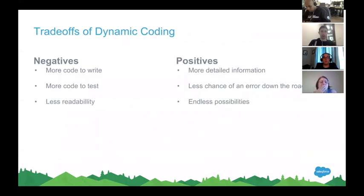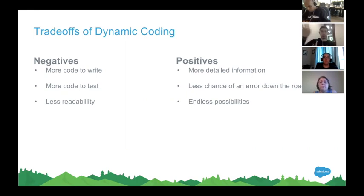Some trade-offs: our static code was a nice two lines — the query and the return statement — whereas that dynamic code was a little bit more. So more code to write, which also means more code to test and less readability, just the nature of having more code and conditions. The problem is there's more detailed information, essentially less chance of an error down the road because we're checking for various things along the way, and ultimately endless possibilities. I can build any sort of query about anything using dynamic SOQL versus the static SOQL that I have to hard-code in place.